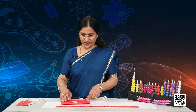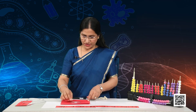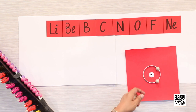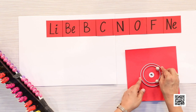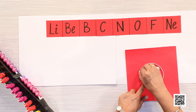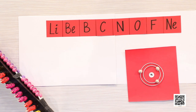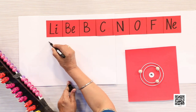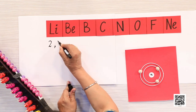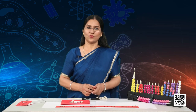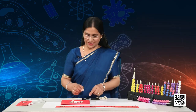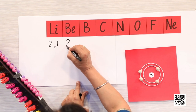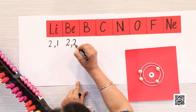Lithium has three electrons: two enter the first shell (K shell) and the third electron enters the L shell. So the electronic configuration of lithium is 2, 1. Beryllium has four electrons, with the fourth electron entering the second shell. The electronic configuration of beryllium is 2, 2.